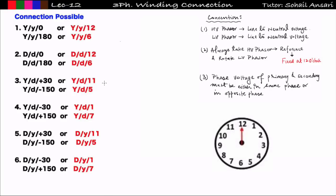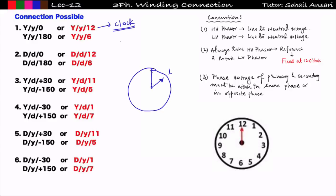Similarly, delta-delta connection is represented as DD0 and DD180. The third type is YD+30 or YD−150, which in clock form is YD11 or YD5. For example, YD1 means 1 o'clock: the minute hand (HV) is at 12 and the hour hand (LV) is at 1. The minute hand is longer, representing HV winding; the hour hand represents LV winding — both in line-to-neutral voltage.